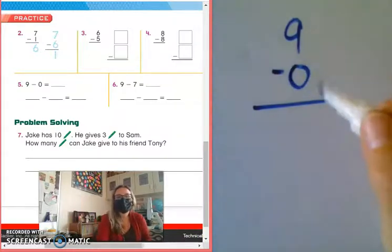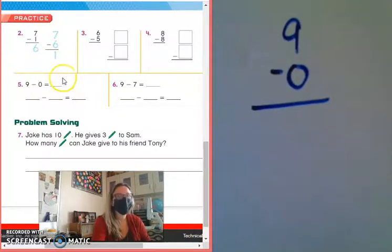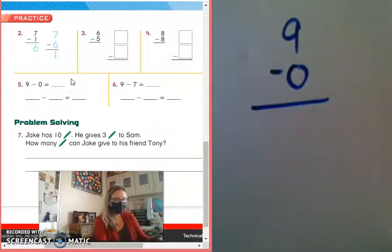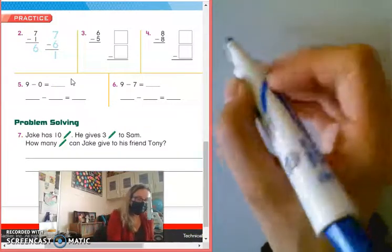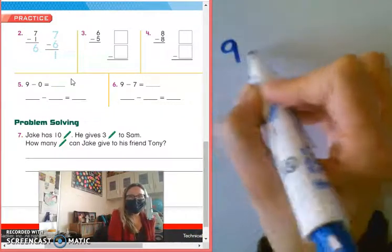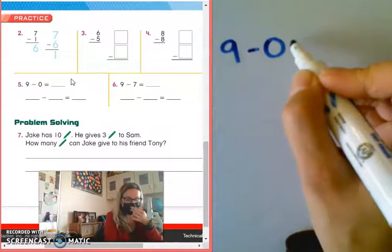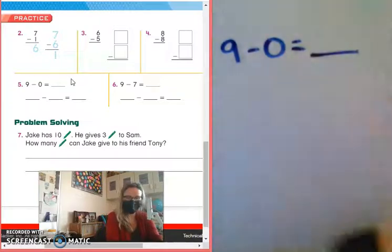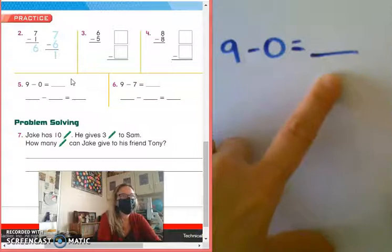We left off looking at problem number five. It says 9 take away 0. So I wrote it this way, but I'm going to write it the way they have it in the book so that it makes sense to your minds. So we have 9, we're taking 0 away from that. Whenever I'm dealing with subtraction, I like to think about cookies or candy. If I have 9 cookies and I don't eat any of them, how many cookies do I have? Everyone? Nine.